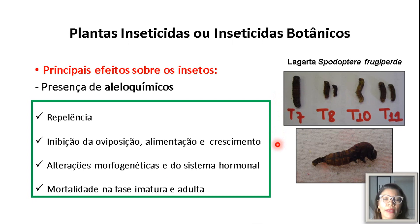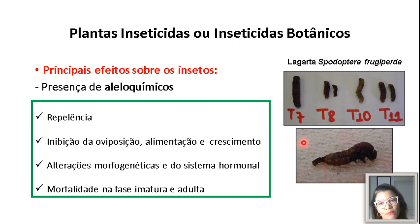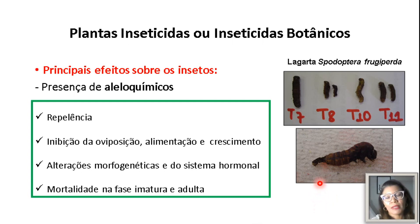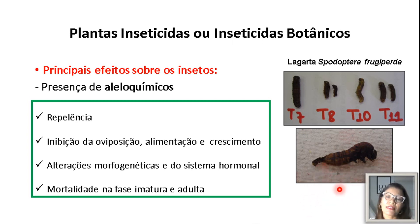Aqui trago algumas imagens da lagarta Spodoptera frugiperda, que é a lagarta do cartucho do milho — imagens do meu trabalho de dissertação — onde apresento vários tratamentos que mostram claramente que a fase larval foi afetada pelas doses dos extratos utilizados. Na imagem inferior, temos uma lagarta que estava passando pelo processo de metamorfose e não conseguiu concluí-lo para chegar à fase de pupa — ela morreu nessa transição da fase larval para a fase pupal.